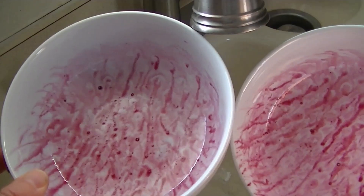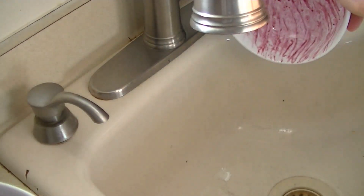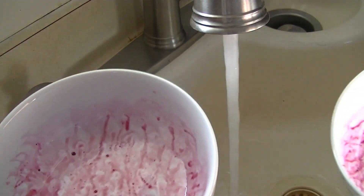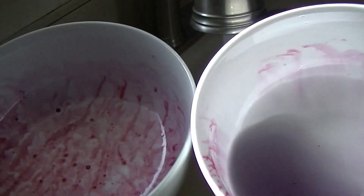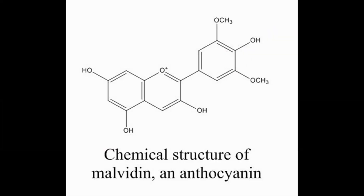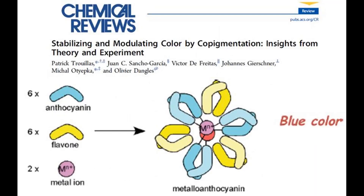The fact that blueberry residue changes color when exposed to metal ions such as copper is a well-understood phenomenon. Blueberries get their color from molecules called anthocyanins. Anthocyanins are responsible for the red, blue, and purple color found in many fruits, vegetables, and plants. While anthocyanins do change color at different pH values, they can also change color due to interactions with metal ions. When anthocyanins bind to metal ions, they tend to take on a blue color.